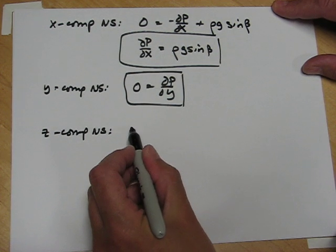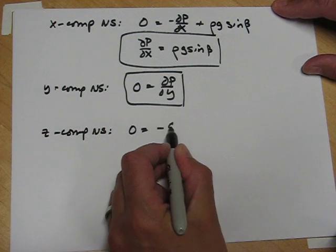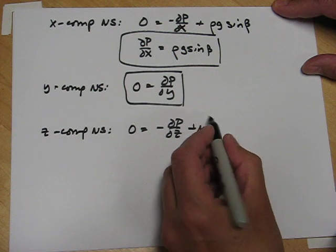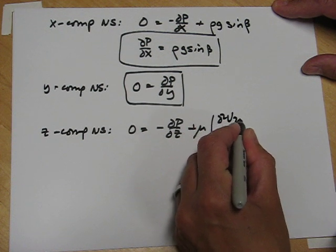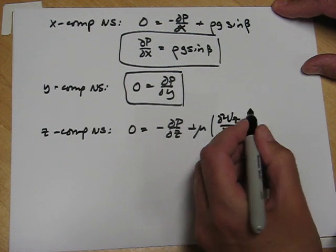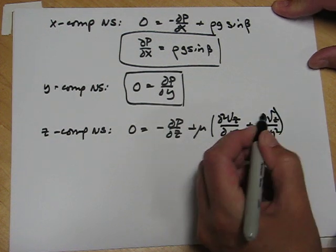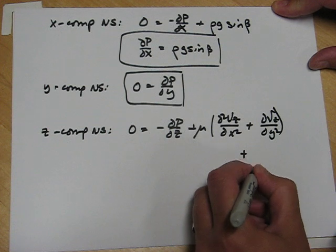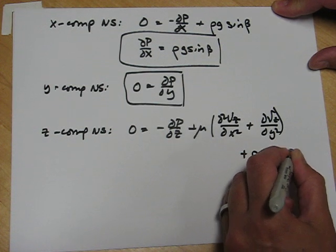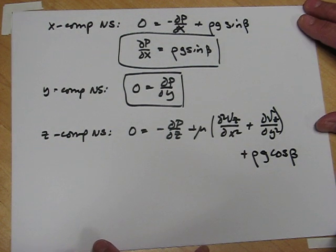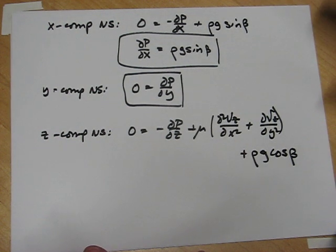The last component is really the interesting one for us. And this is the equation that we need to solve for the velocity profile. Before we attempt to solve it, let's one more time go through and make sure that everything is or is not zero.